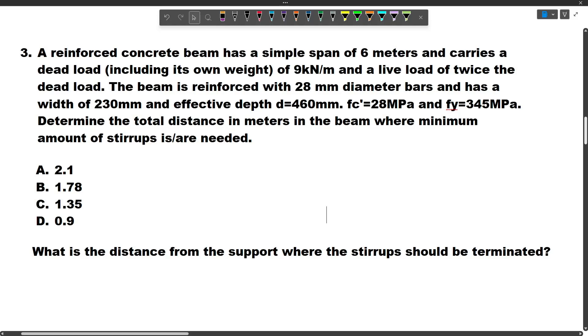In this video, let's try to solve this problem. A reinforced concrete beam has a simple span of 6 meters and carries a dead load including its own weight of 9kN/m and a live load of twice the dead load. The beam is reinforced with 28mm diameter bars and has a width of 230mm and effective depth d=460mm. fc'=28MPa and fy=345MPa. Determine the total distance in meters in the beam where minimum amount of stirrups is or are needed.